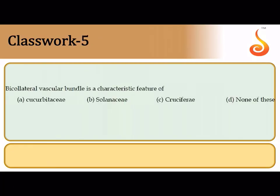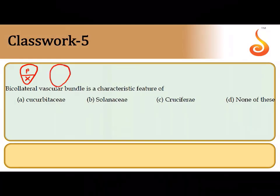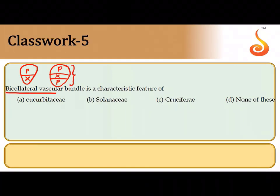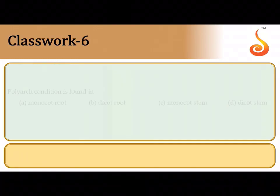In question 5, bi-collateral vascular bundles: we learned about conjoint collateral vascular bundles where xylem is on one side and phloem on the same radius. But in some plants, xylem occupies a central position with phloem on both sides — this is called a bi-collateral vascular bundle, which is a very important feature of the family Cucurbitaceae.